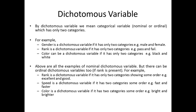The above are examples of nominal dichotomous variables, but there can be ordinal dichotomous variables too. Nominal variables are just labels given so that they can be differentiated, with nothing more. Ordinal variables go beyond the name because they also include order or rank among the variables. So rank is a dichotomous variable if it has only two categories showing some order — for example, excellent and good, where there is a rank present between them.